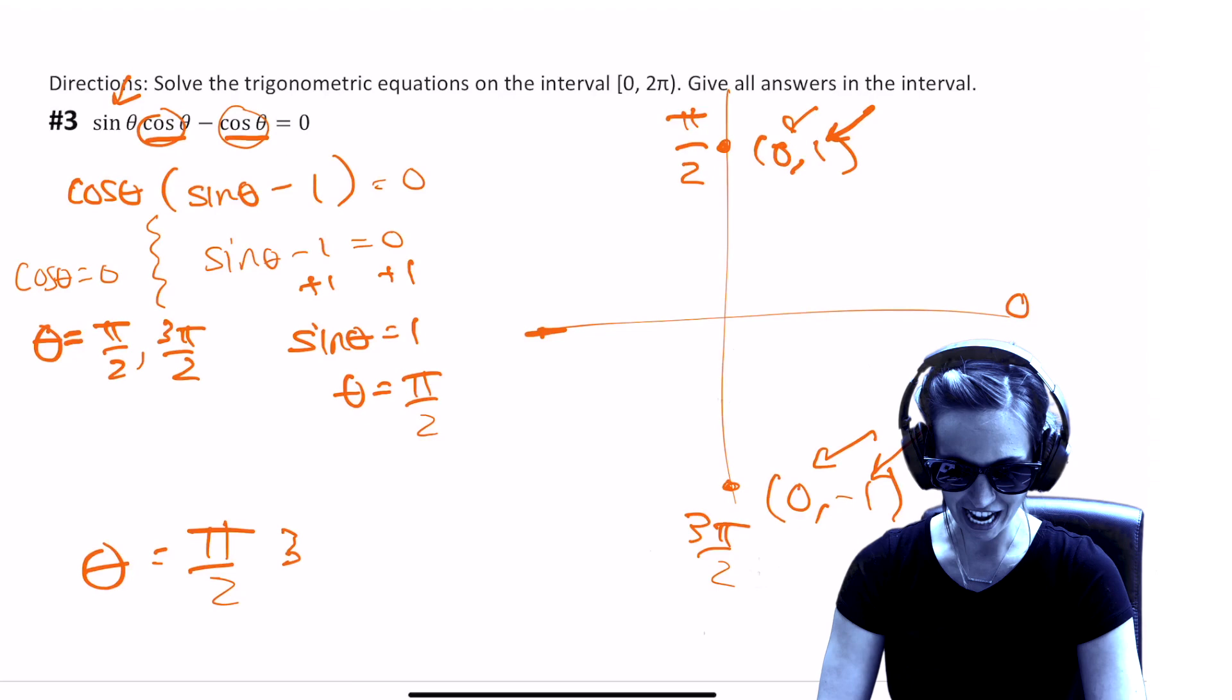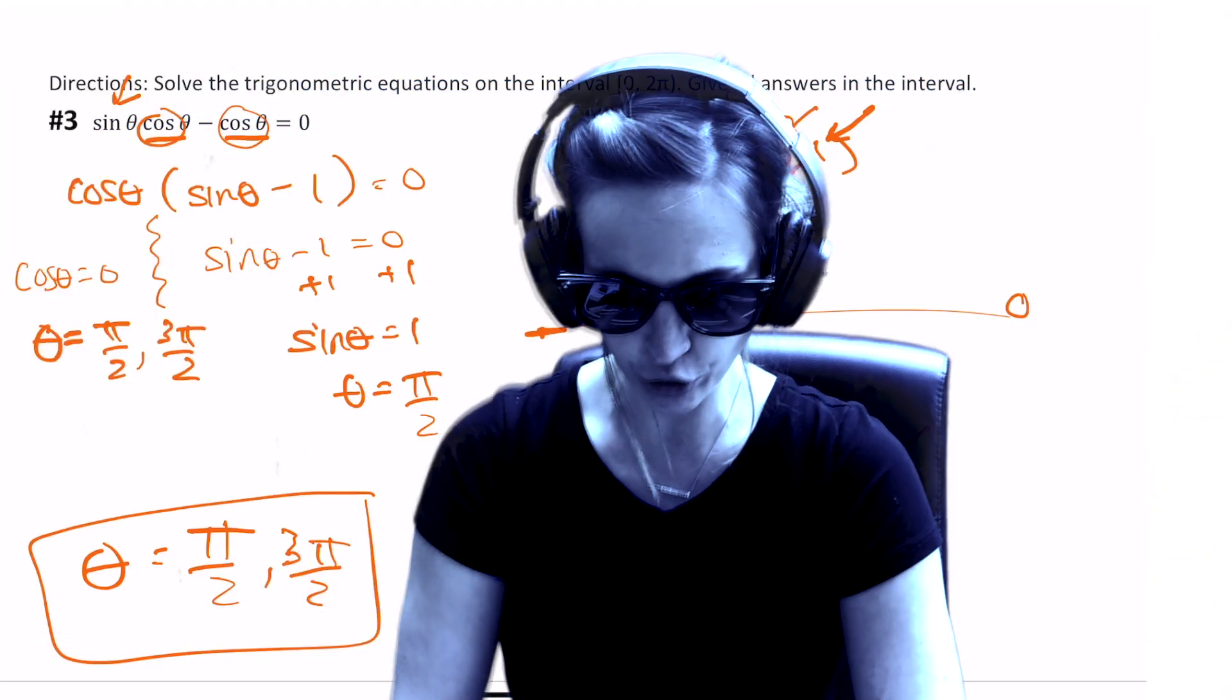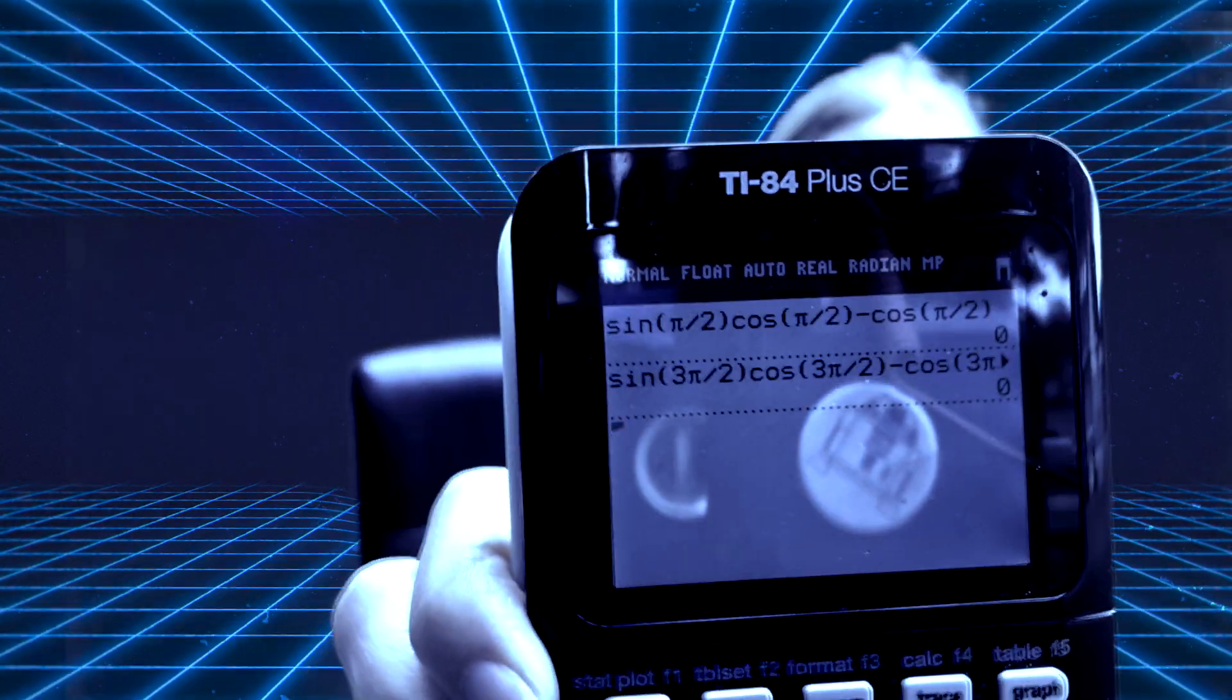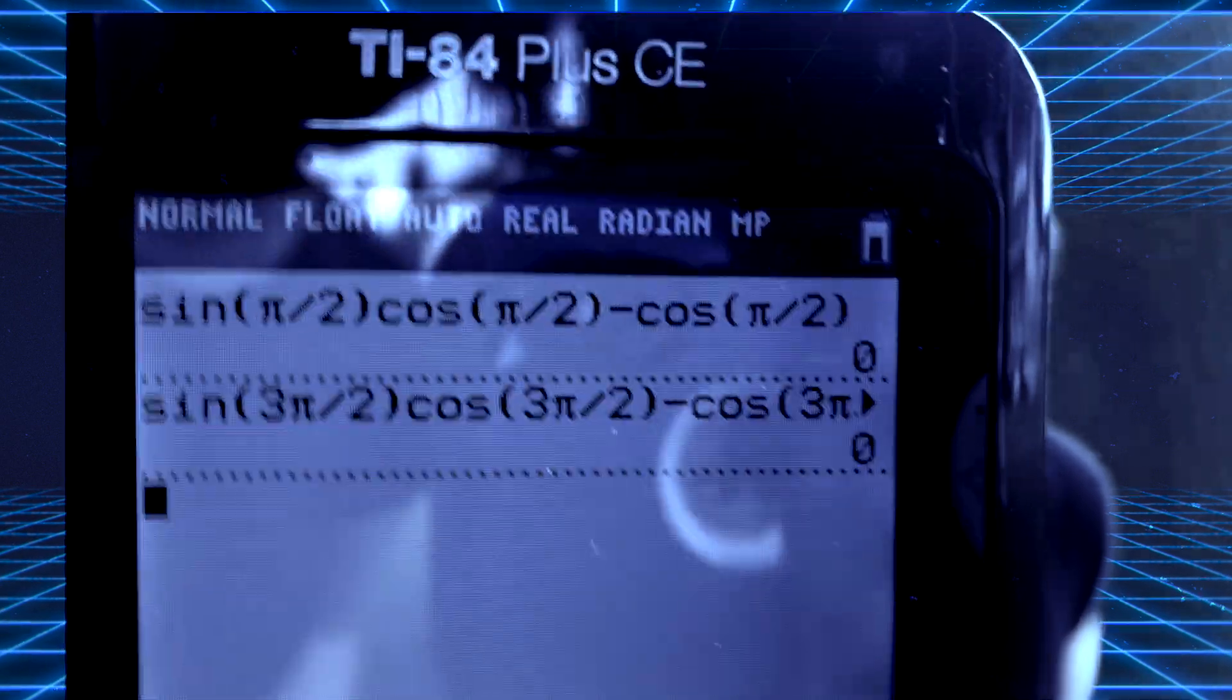Agent R, I've got it! Theta needs to be pi over two and three pi over two. Checking! Here we go! Successful! Mission success! Missile obliterated!